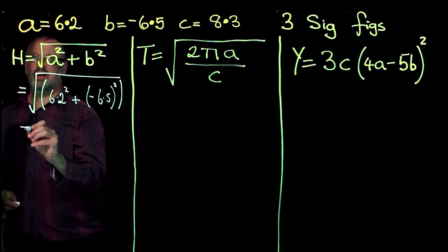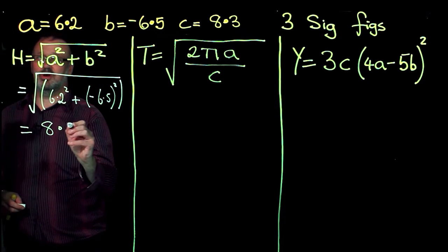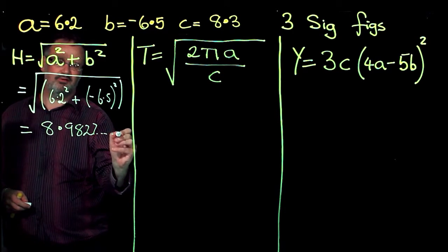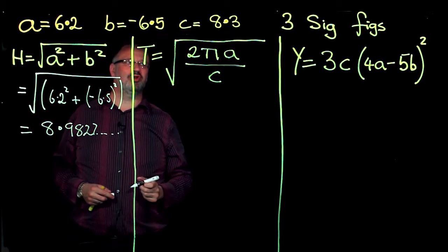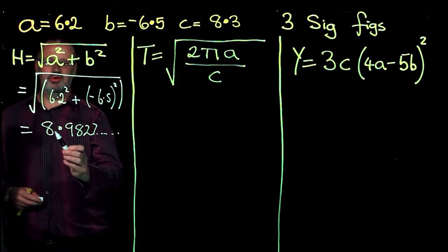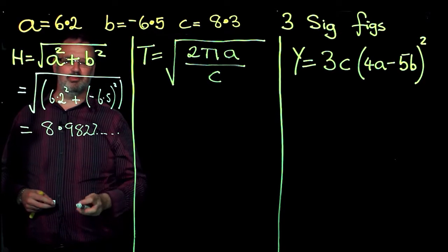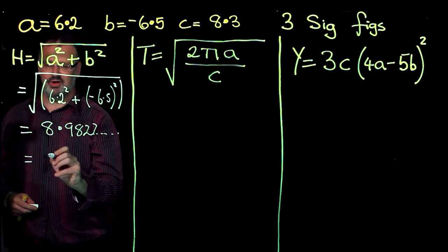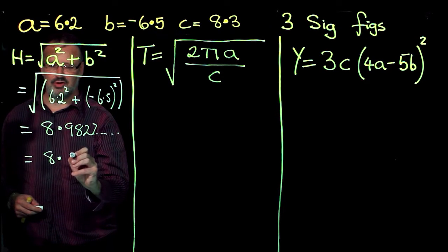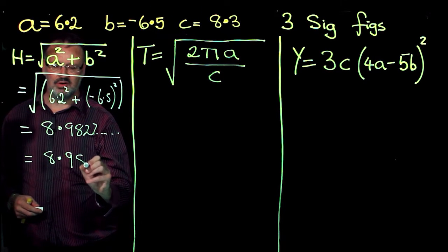When I do that, I get the answer 8.9827 and a few other numbers. And I want it to three significant figures, 1, 2, 3, my fourth number is 2, so to three significant figures, my solution is 8.98.